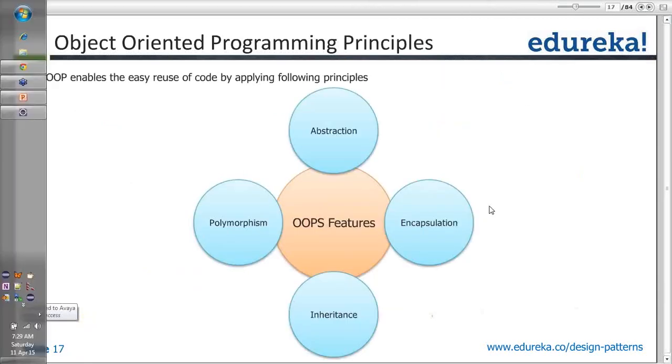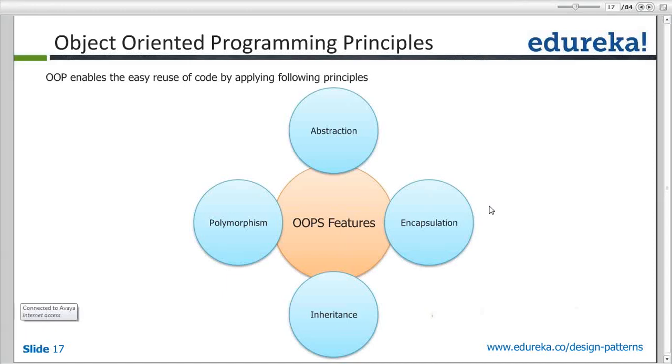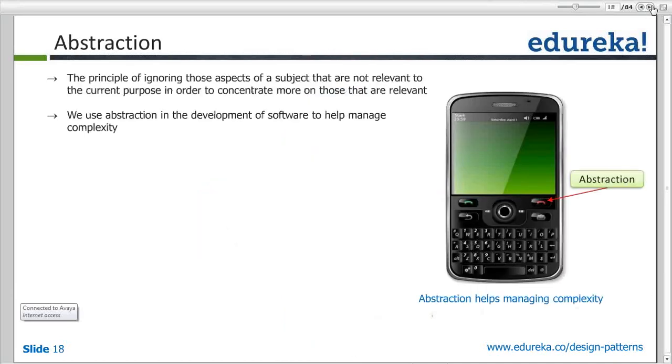Let's look at the object-oriented world and the principles that we should be aware of. Four important principles: abstraction, encapsulation, inheritance, and polymorphism. We'll talk about them one by one.